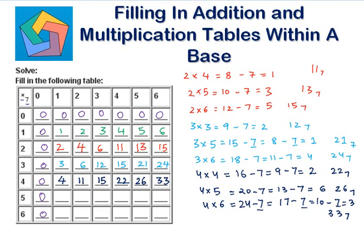Now with 5: 5 times 1 is 5. 5 times 2 is 10, and 10 is 13 in base 7. 5 times 3 is 15, and 15 is 21 in base 7. 5 times 4 is 20, and 20 is 26 in base 7. 5 times 5 is 25. 25 minus 7 is 18, 18 minus 7 is 11, and 11 minus 7 is 4 — that's 34 to the base 7.